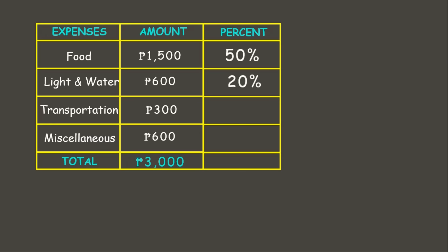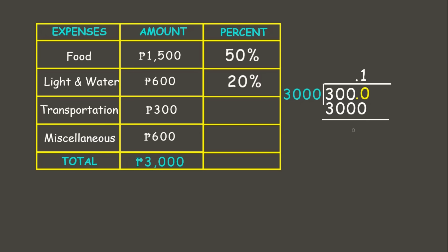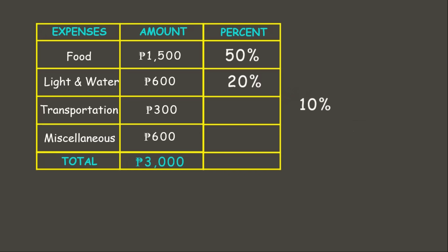Now let's move on to transportation: 300 pesos divided by 3,000 pesos. We get 3,000 ÷ 3,000 = 0.1, and 0.1 times 100 is 10 percent. Lastly, miscellaneous is also 600 pesos, the same as light and water, so it is also 20 percent. This gives us a total of 100 percent.